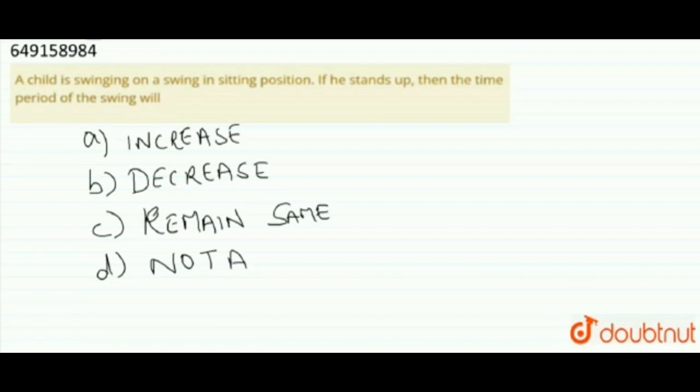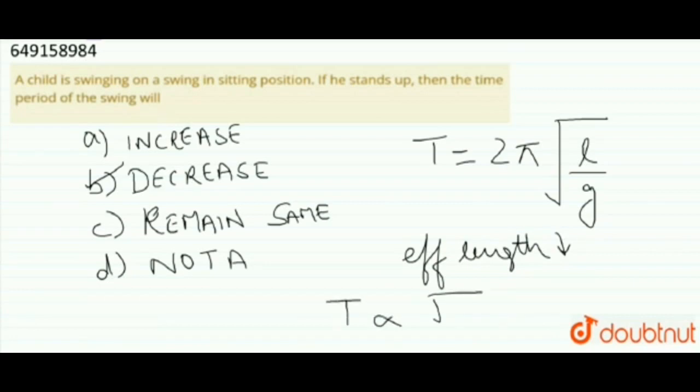The correct option is option B. The time period will decrease. As you see, time period is 2π√(l/g). Now, as the child is standing in a swing, the effective length will decrease. And since T is directly proportional to √l, if length decreases, time period will also decrease. So option B will be the correct answer.